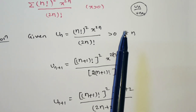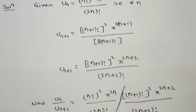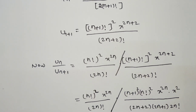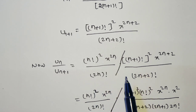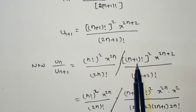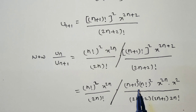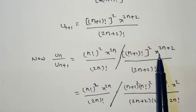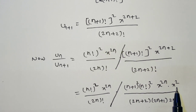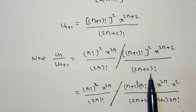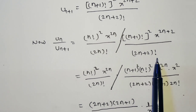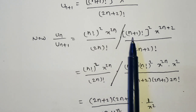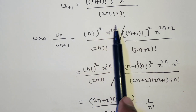Now I want u_n divided by u_{n+1}. In the ratio test, u_n is the numerator and u_{n+1} is the denominator. To simplify, we cancel common terms. Write (n+1) factorial as (n+1) times n factorial, so (n+1) factorial whole square becomes (n+1)² times (n factorial)². Write x^{2n+2} as x^{2n} times x². For 2n+2 factorial, write it as (2n+2)(2n+1)(2n) factorial. We do this to eliminate common terms.